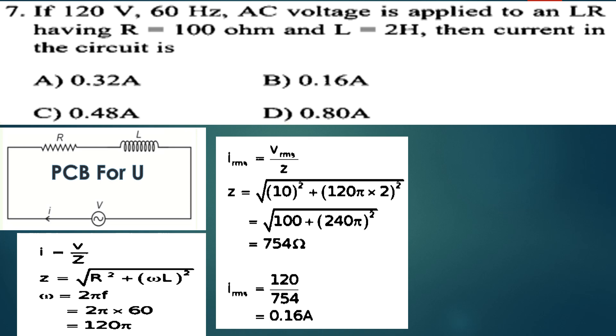Current I is equal to V divided by Z. The impedance Z is equal to the square root of R squared plus XL squared.